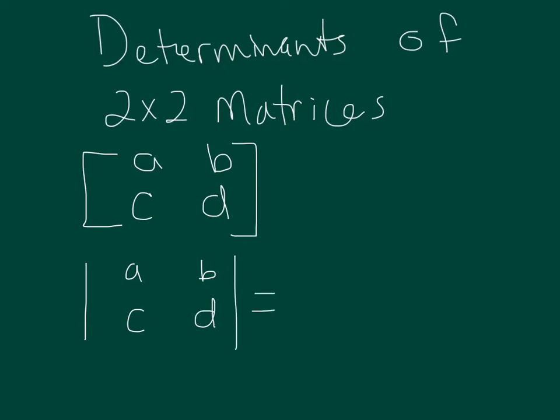The determinant equals A times D multiplied together, and then you subtract the product of B and C.